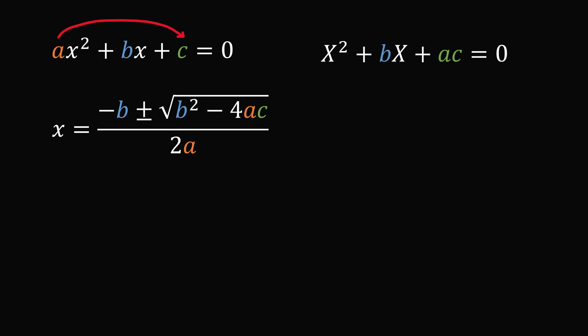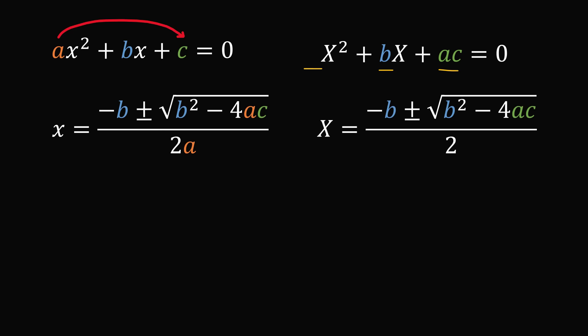We get a new quadratic equation: x squared plus bx plus ac equals 0. Using coefficients 1 on x squared, b on x, and ac as the constant term, we can solve for the roots as X equals negative b plus or minus the square root of b squared minus 4ac, all over 2. Comparing the two formulas, the numerators are identical — they only differ in the denominator by a factor of a. In other words, the roots of the original quadratic are just the roots of the new quadratic divided by the factor of a. So that's why the slide and divide method works.